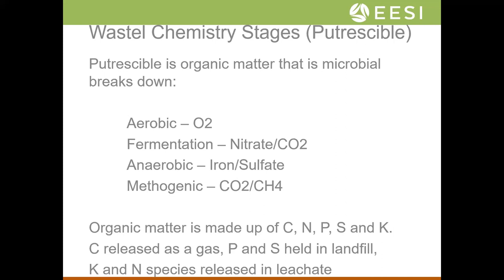Organic matter is made up of a certain ratio of carbon, nitrogen, phosphate, sulfate and potassium, and the microbes need that to break down. There's plenty of excess carbon and nitrogen, so they release those. They keep phosphate cycling because they need it — so you don't often see elevated phosphate associated with landfill leachate. Sulfur gets precipitated as pyrite. Potassium and nitrogen species are mostly released, particularly nitrogen to groundwater, and potassium entirely to groundwater.